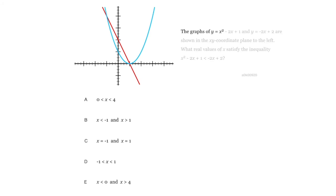The graphs of y = x² - 2x + 1 and y = -2x + 2 are shown in the xy-coordinate plane to the left. What real values of x satisfy the inequality where this one is less than this one? Press pause and answer the question.